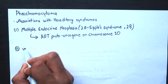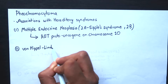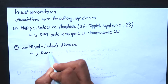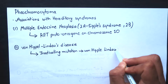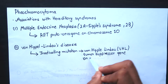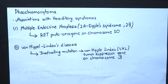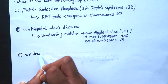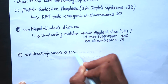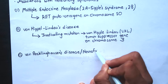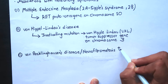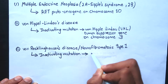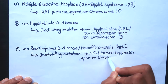Next is von Hippel-Lindau disease. It is also an autosomal dominant disorder associated with an inactivating mutation of the von Hippel-Lindau tumor suppressor gene on chromosome 3. This is also an autosomal dominant disorder associated with an inactivating mutation of the NF1 tumor suppressor gene on chromosome 17.